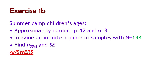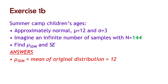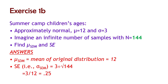Find the mean and standard error for n equals 144. The mean of the sampling distribution of means is still 12 — the mean of the means is the mean, no change. The standard error is the original standard deviation divided by the square root of 144. So that's 3 divided by 12, which is 0.25 — about a third the size of the previous standard error, and a twelfth the size of the original standard deviation.